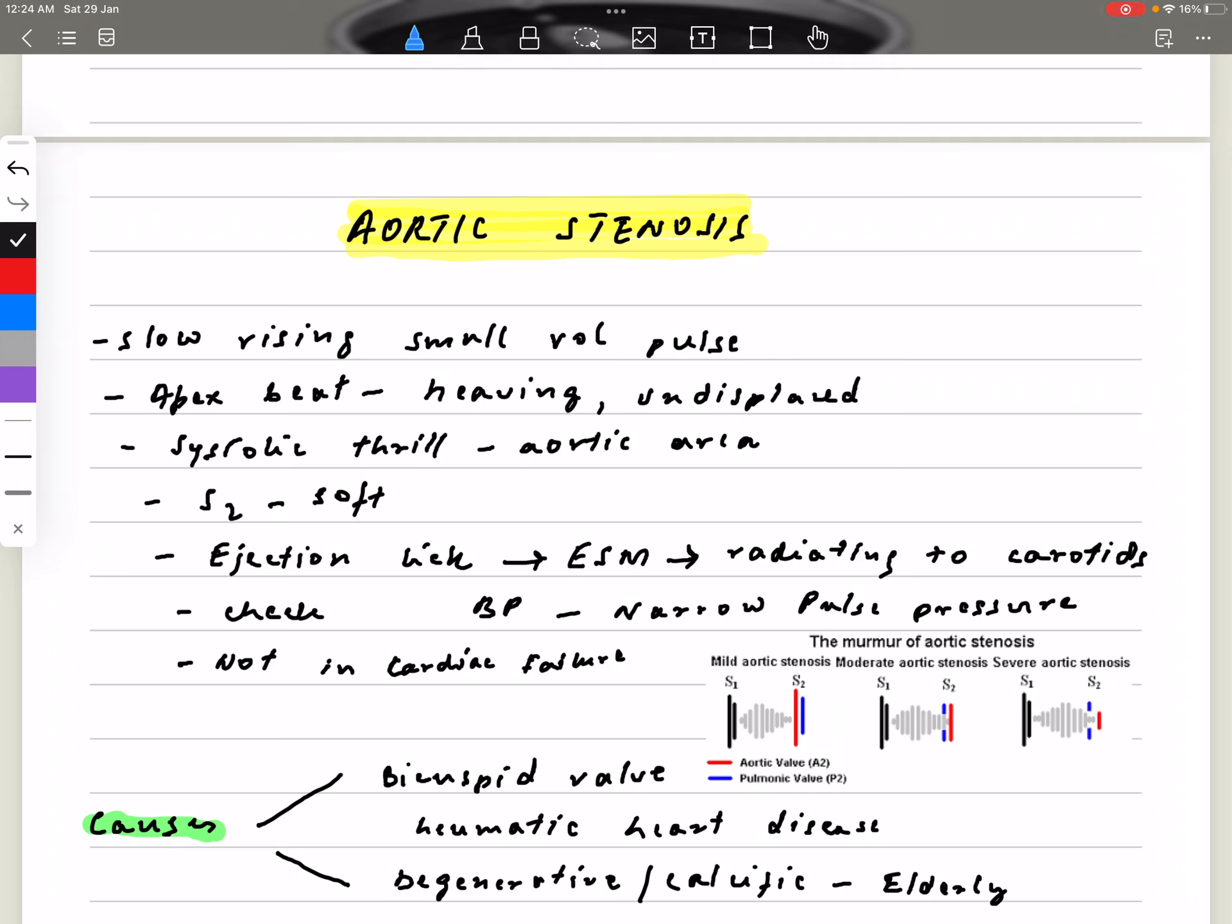You may appreciate a systolic thrill at the aortic area, and the second heart sound will be soft. Then on auscultation, you're going to appreciate an ejection click which is followed by the ejection systolic murmur, which is radiating to the carotids. You're going to listen to this murmur louder in the aortic area.